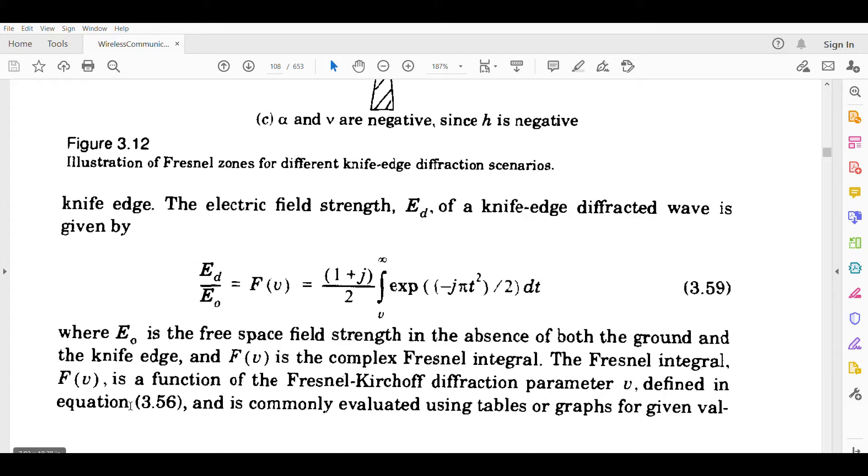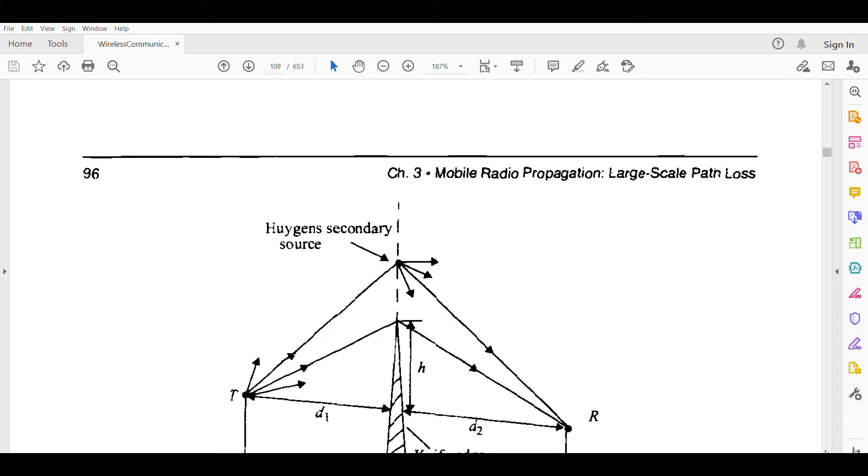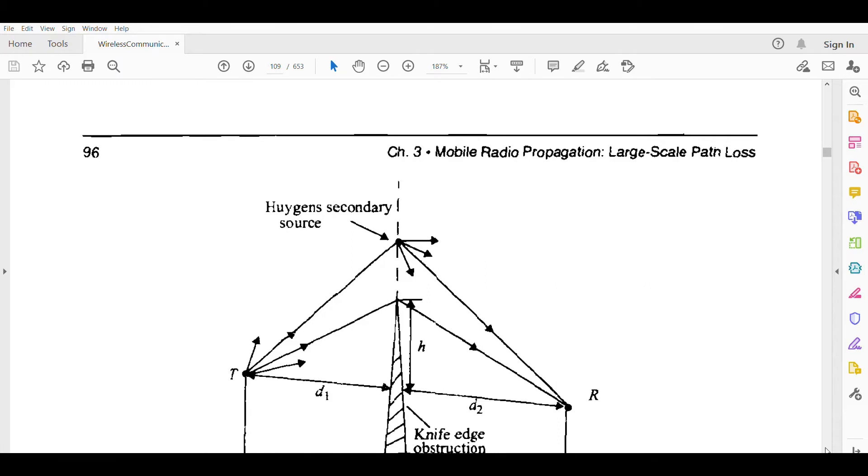This Fresnel integral F(v) is the function of the Fresnel-Kirchhoff diffraction parameter v, defined in equation 3.56 which we defined in the previous class, and it is commonly evaluated using tables or graphs for given values.